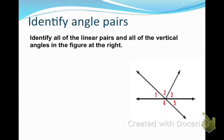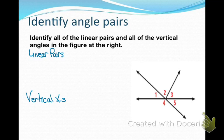Now let's look at this figure and identify all the linear pairs and all the vertical angles. Remember that a linear pair are two angles that add up to 180 degrees. So let's look at our diagram: 5 and 3 does not give me 180, 3 and 2 does not, 1 and 2 does not. But 1 and 4 does — that gives me 180. So angle 1 and angle 4 form a linear pair.